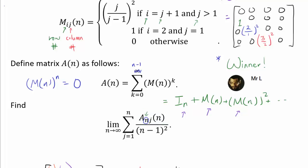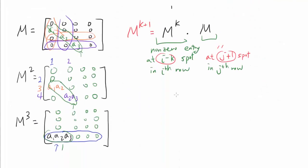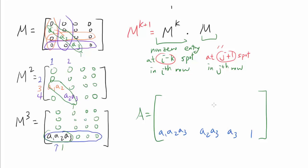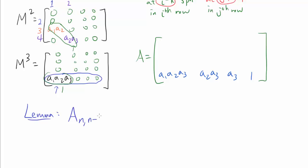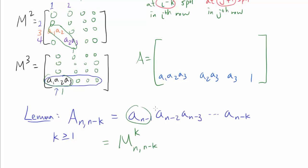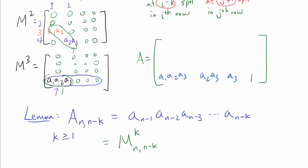What do we have in the final row of A of N? From M cubed we get A1 times A2 times A3; from M squared we get A2 times A3; from M we get A3; and from the identity matrix we get 1. The pattern is clear: the entries in the Nth row from the right are A3, then A2 times A3, then A1 times A2 times A3. The N minus K-th entry in the Nth row comes from M to the K-th power. The N minus 1st entry comes from M, the N minus 2nd from M squared, and so on.